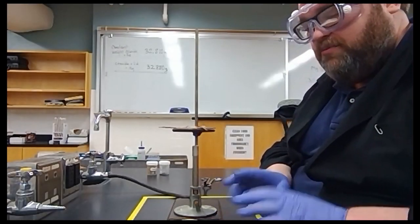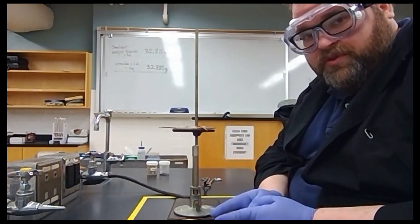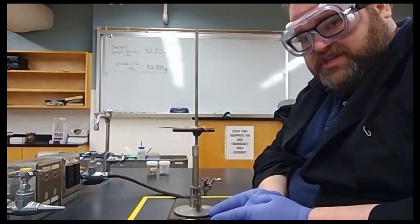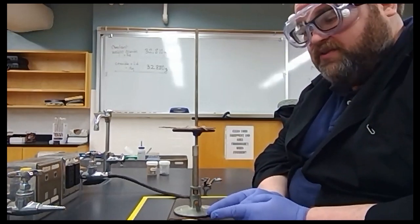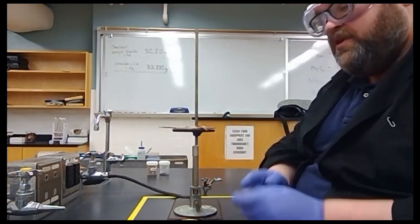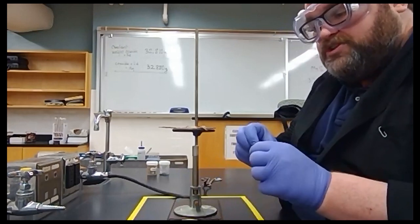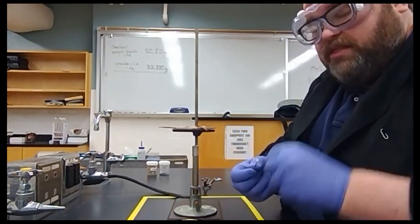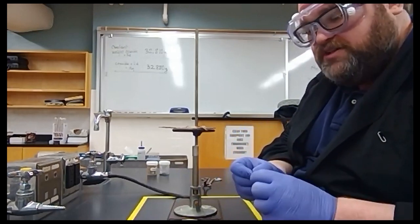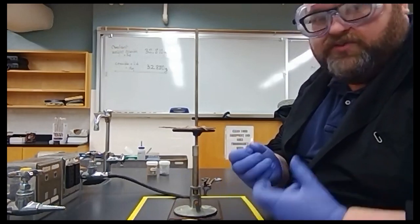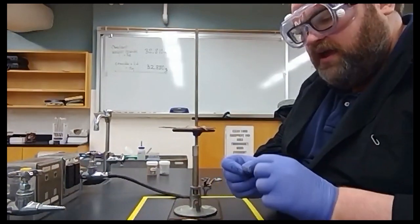Now we have our crucible clean and cooled down. We obtained the mass of the crucible and the lid. We then obtained a small ribbon of magnesium and we took our sandpaper. We just lightly went over the exterior of it to take off any residual oxides, any rust, anything like that that's taken to the outside.